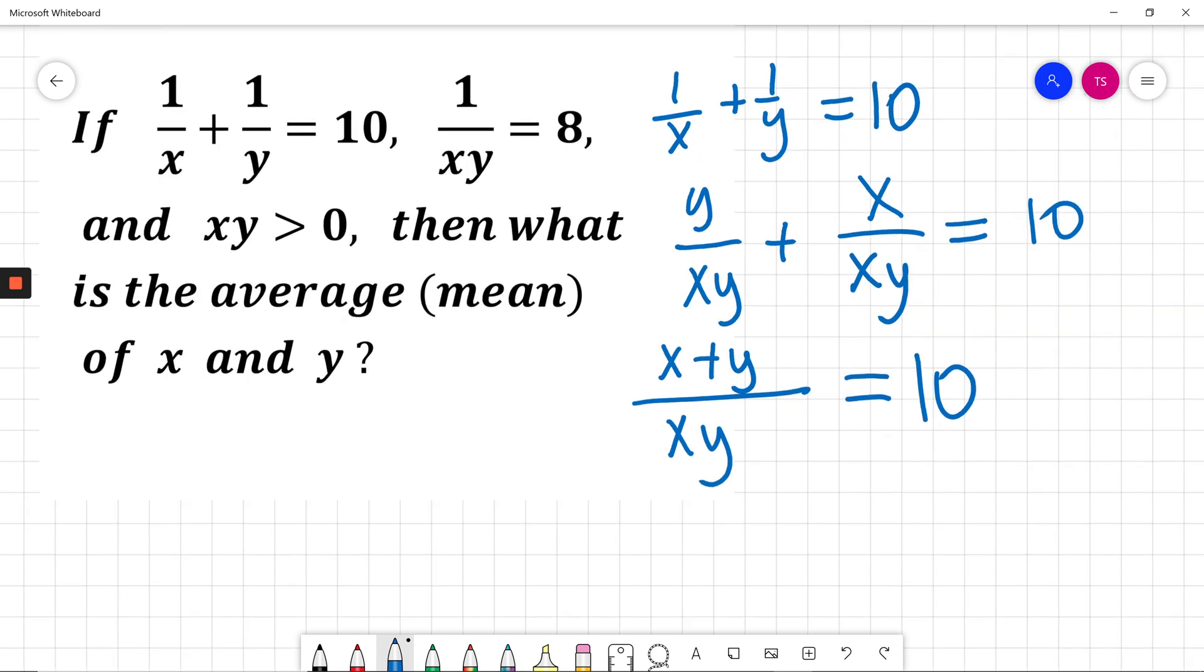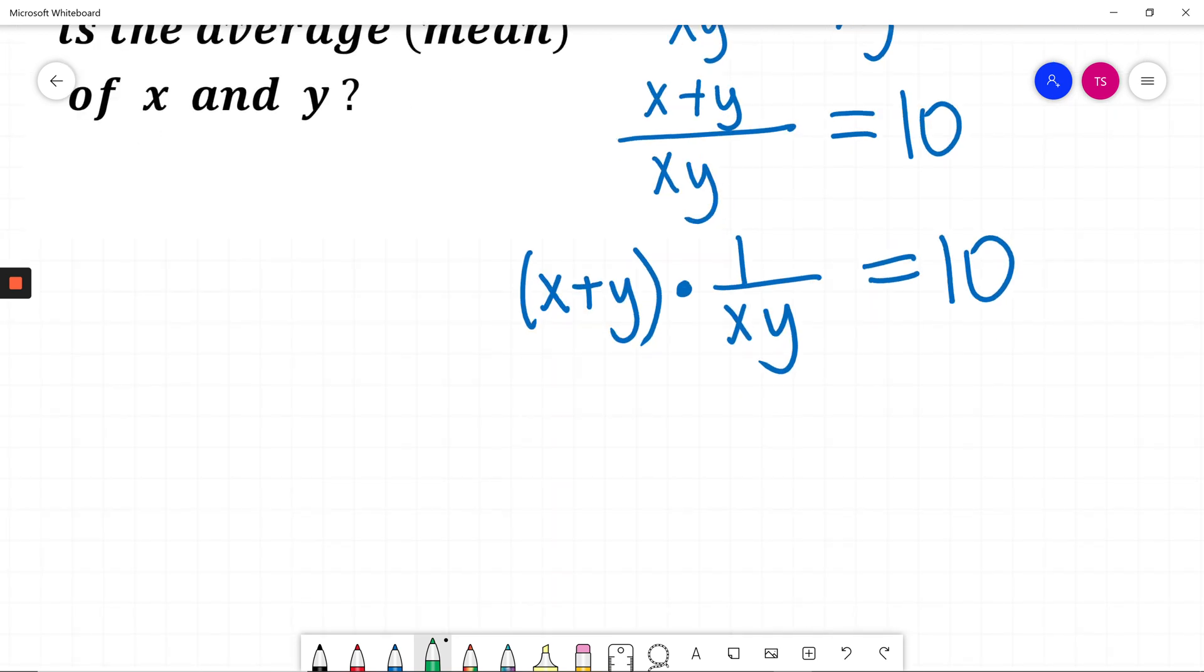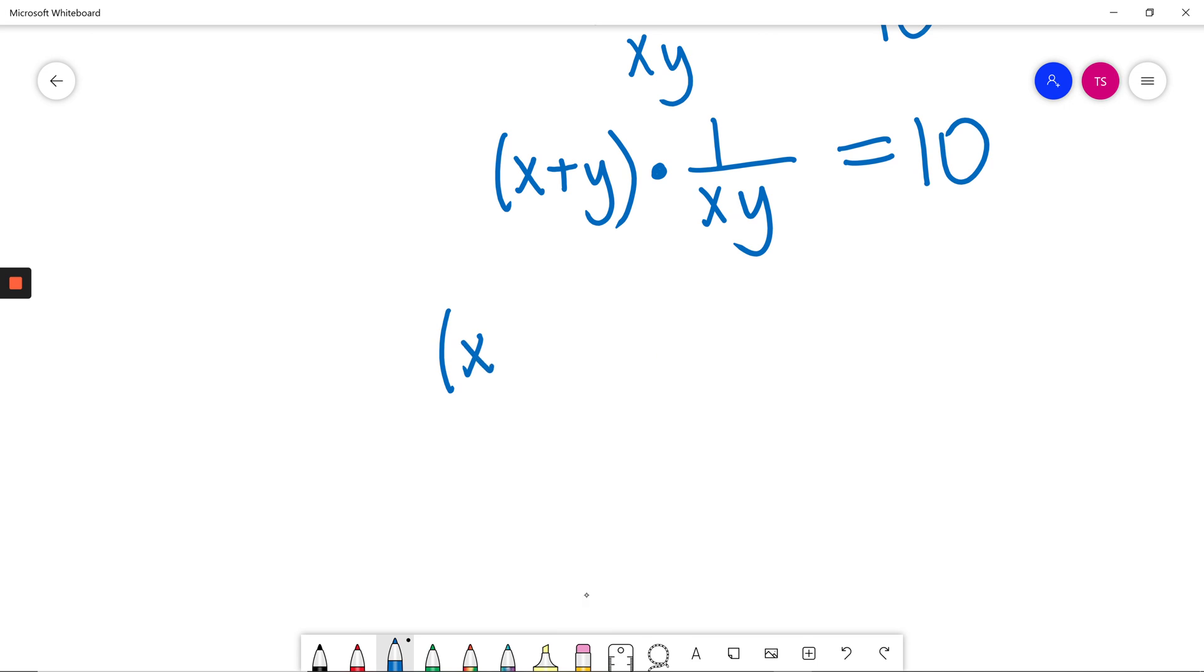Now I will write it as x plus y times 1 over xy. This will be the same thing. This is equal to 10. 1 divided by xy, I know this is 8 here, so x plus y times 8 is equal to 10.